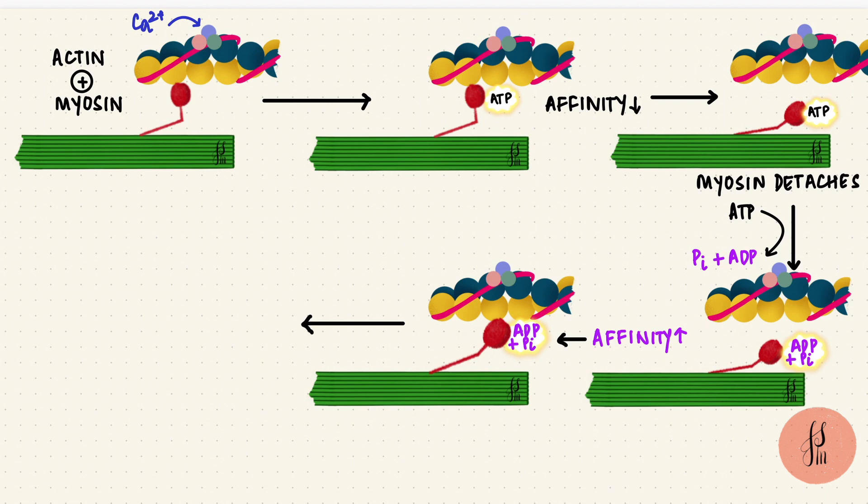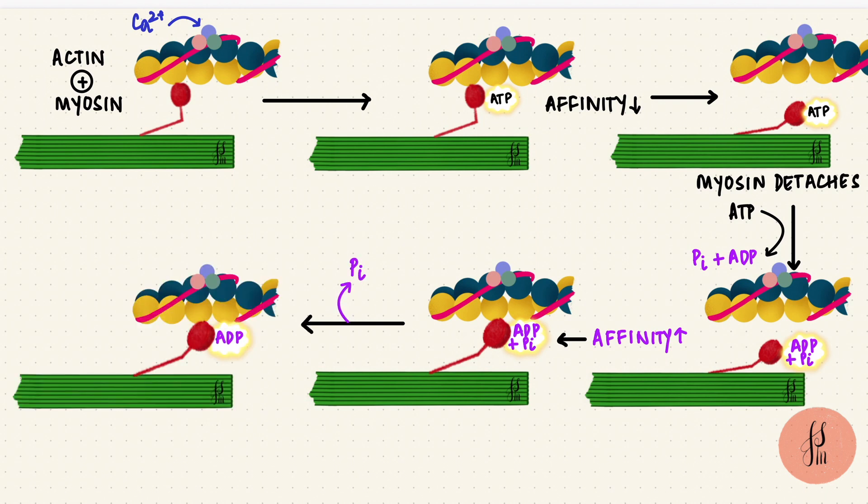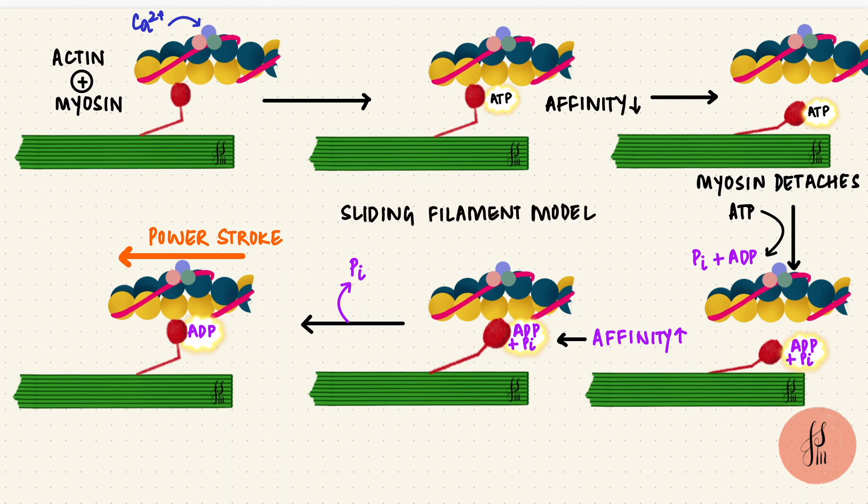With the release of the inorganic phosphate, the energy from that high phosphate bond is used to bend the myosin head at the hinge region. As it does so, it drags the actin filament along with it. This is called a power stroke, the bending of the myosin head. This is the sliding filament model, because the thin filaments are sliding over the thick filaments. And each time this happens, the thin filament slides inward.